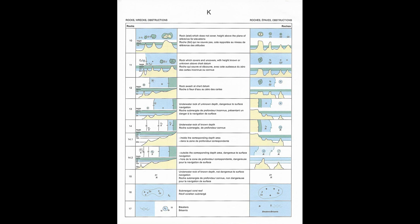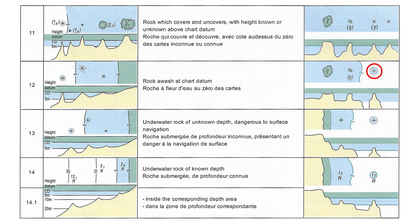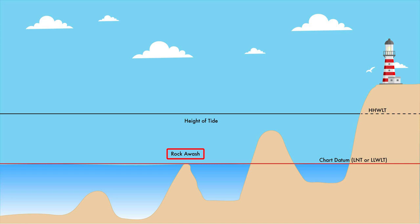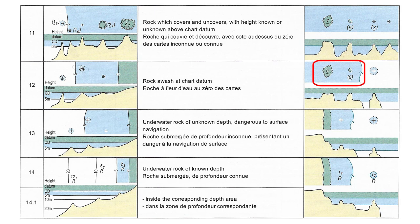The left column is for symbols used in international charts. In Canada, for CHS charts, we always use the right column. Looking in the right column, we find the symbol that we're looking for. It might be hard to see on the screen, but this symbol means a rock awash at chart datum. This means that at chart datum, or lowest normal tide, the top of the rock is even with the surface. Another way that it can be expressed is with the underlining of the zero, meaning it uncovers at a zero tide, or chart datum.